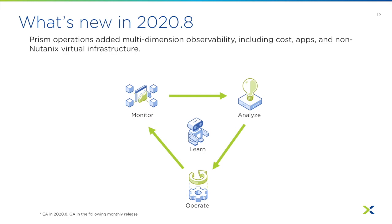In the latest release, 2020.a, the operations tier — formerly known as Prism Pro — is going to expand its coverage to multi-dimensional data. In the past, all the benefits of machine learning and automation were applicable only to your Nutanix environment.